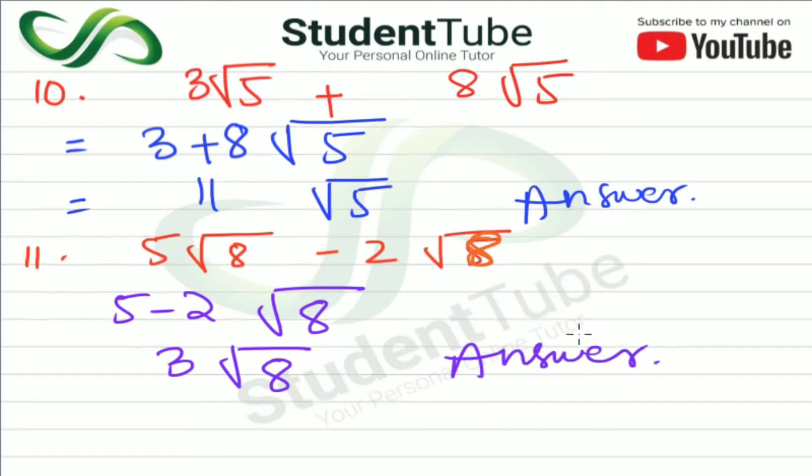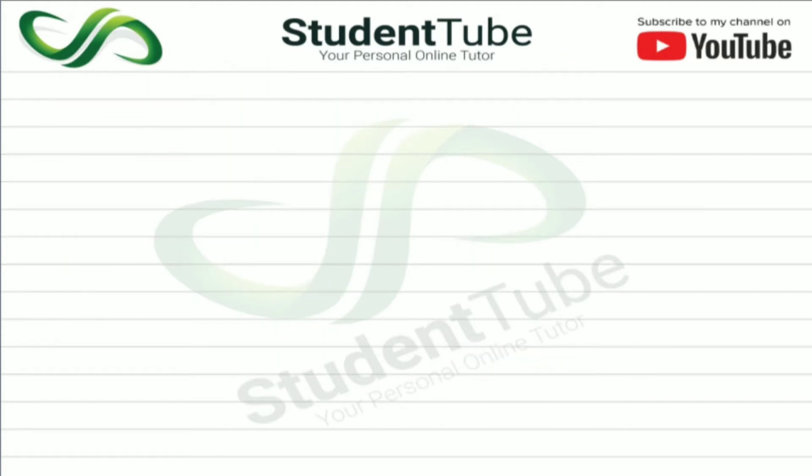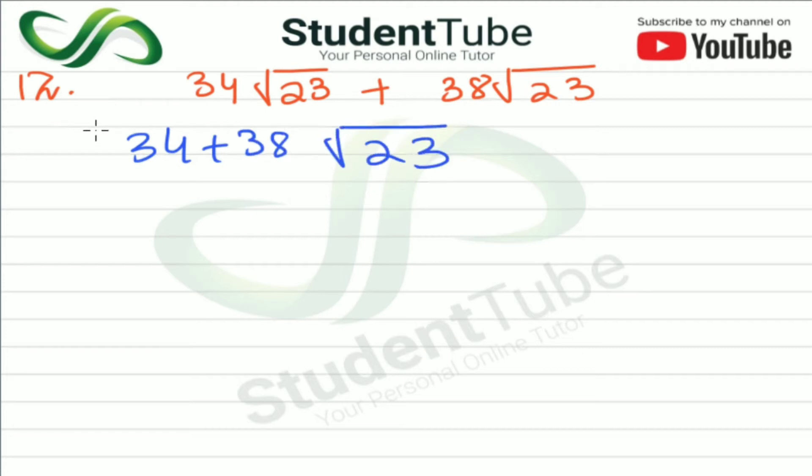After this, our last question of today's exercise is question number 12. So question number 12 is 34 under root 23 plus 38 under root 23. Because when the common terms are the same, then we take common. So similarly here also we will do 34 plus 38 and take 23 as common. And after this, when we add 34 and 38, it becomes 72. Here you can also check by doing it roughly: 34 and 38, so 8 and 4 become 12, one will go up, 3 and 3 become 6, and 1 became 7. So it became 72, and this came the same way, 23.